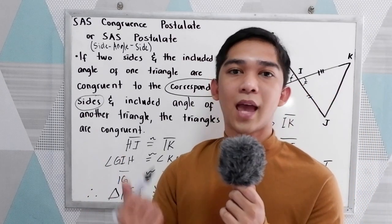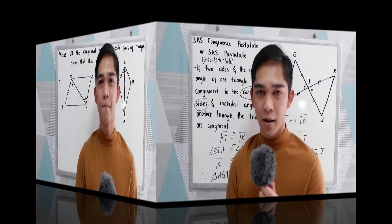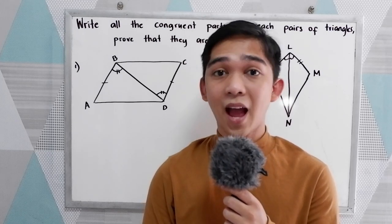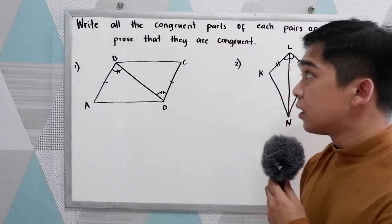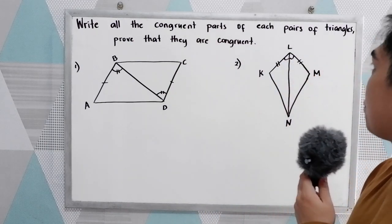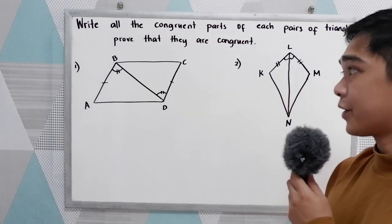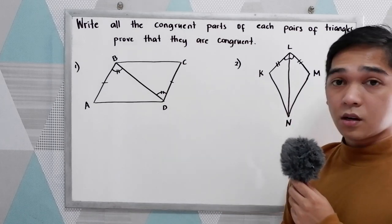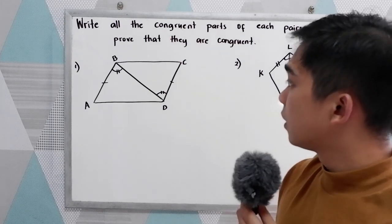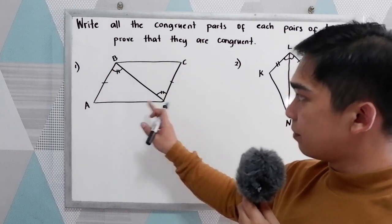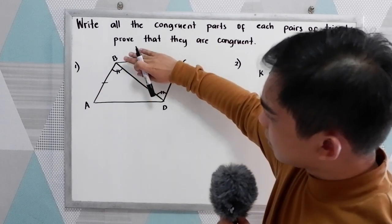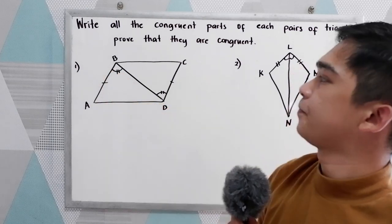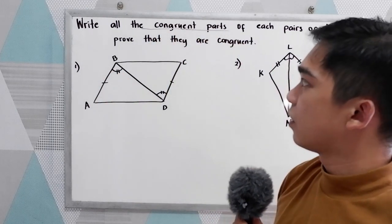Now let's have a series of examples and exercises under the side angle side postulate. Direction: write all the congruent parts of each pair of triangles and prove that they are congruent. We have number one and number two. Let's try to answer number one. We have here a parallelogram ABCD, our first triangle ABD, and the second triangle BCD.